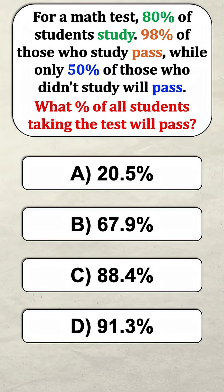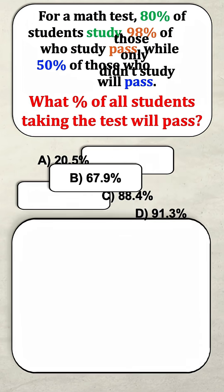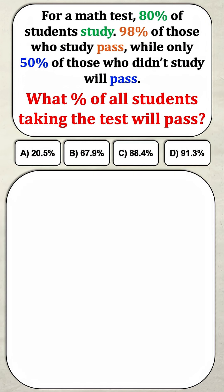Can you solve this math problem? For a math test, 80% of the students study, and 98% of the students who study pass, while only 50% of the students who didn't study will pass. What's the total percentage of all the students taking the test who will pass?